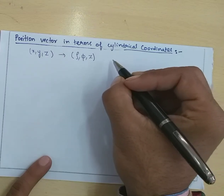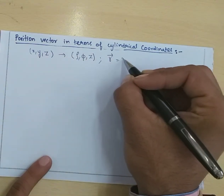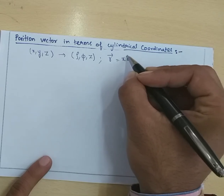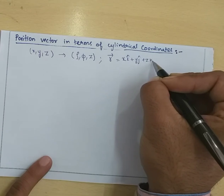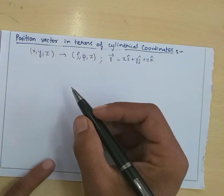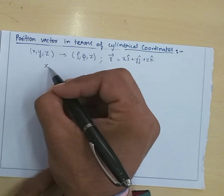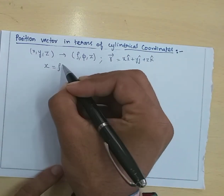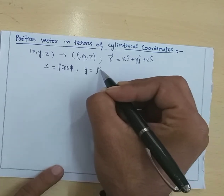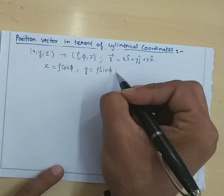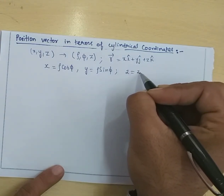You know how to write the position vector in terms of Cartesian coordinates: that is X·i-cap plus Y·j-cap plus Z·k-cap. Yesterday we wrote the values of cylindrical coordinates: X = Rho·cos(Phi), Y = Rho·sin(Phi), and Z = Z.